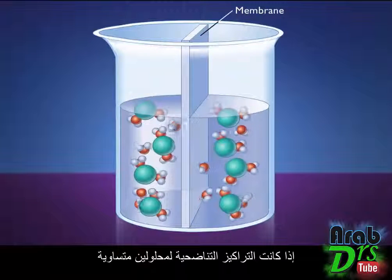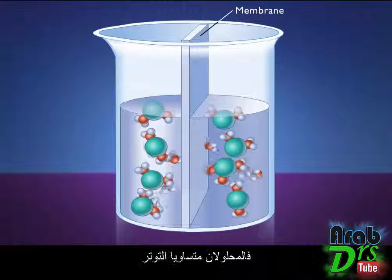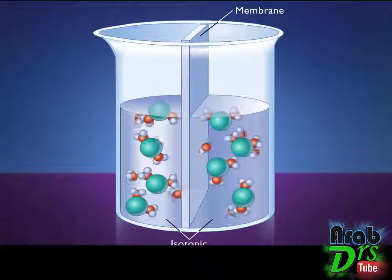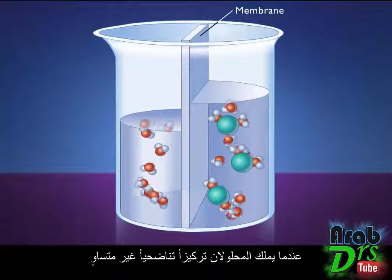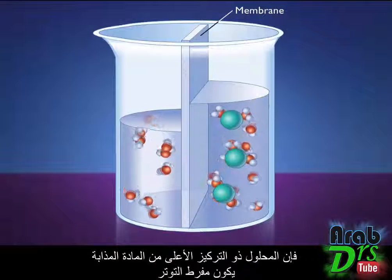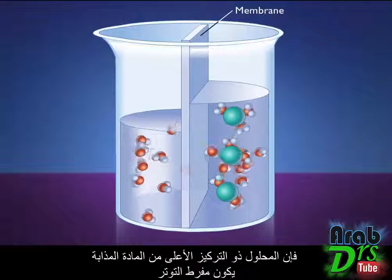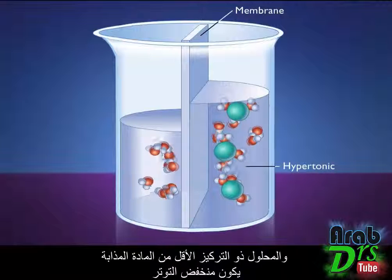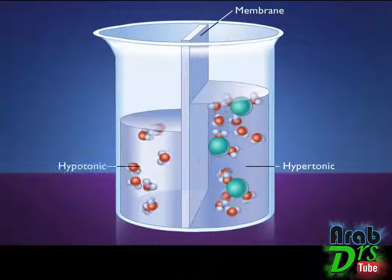If the osmotic concentrations of two solutions are equal, the solutions are isotonic. However, when the solutions have unequal osmotic concentrations, the solution with the higher concentration of solutes is hypertonic and the solution with the lower concentration of solutes is hypotonic.